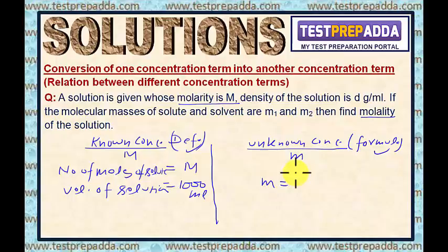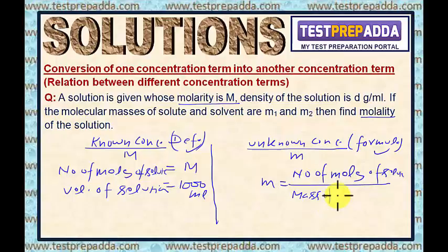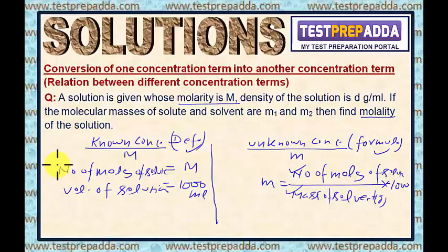For the formula of molality: molality is number of moles of solute upon mass of solvent in gram into 1000. Again, two data are required in the formula. With the help of the definition, we have written two data. So our job is to convert these two data points into these two — that is why I call this the conversion method.